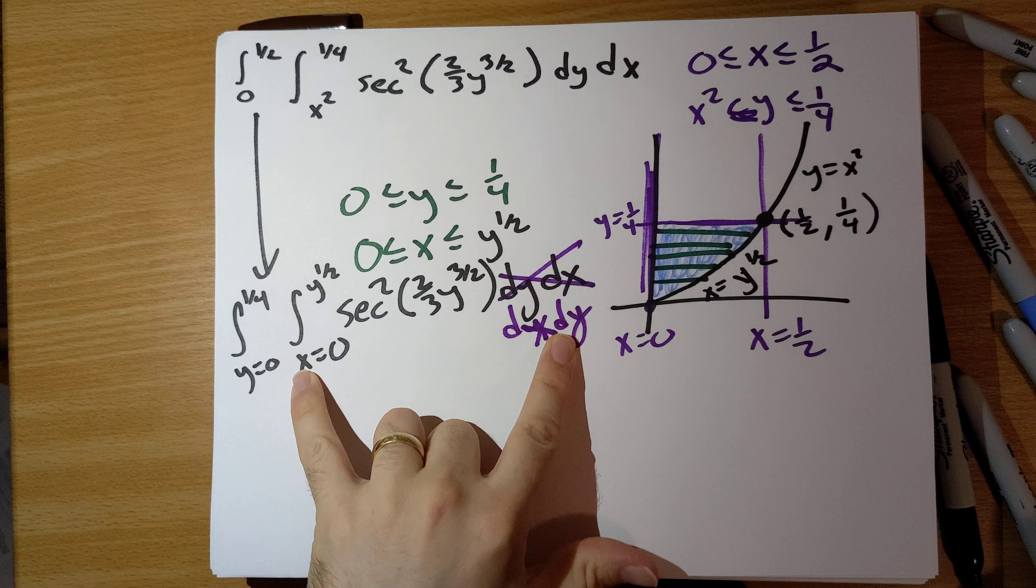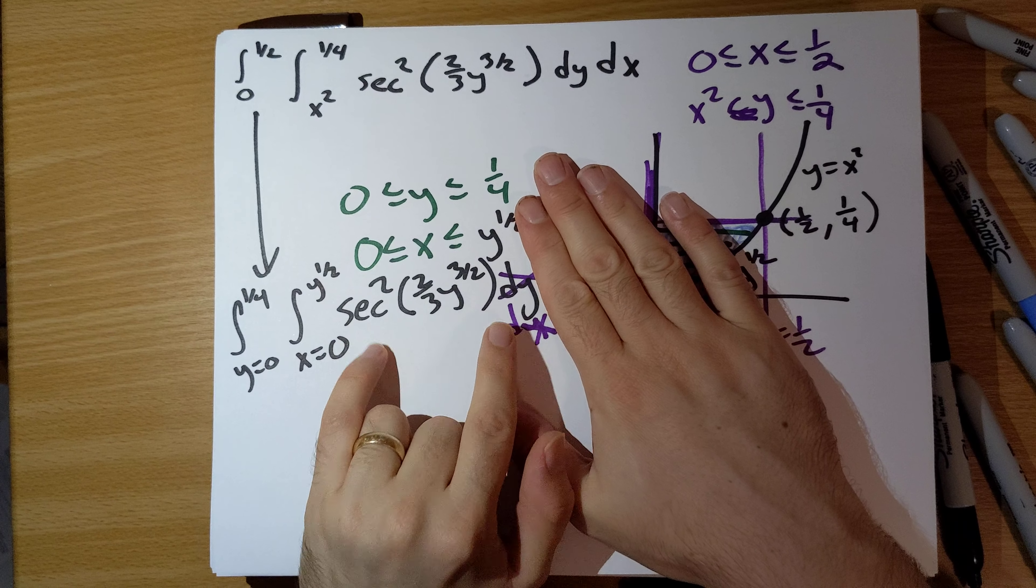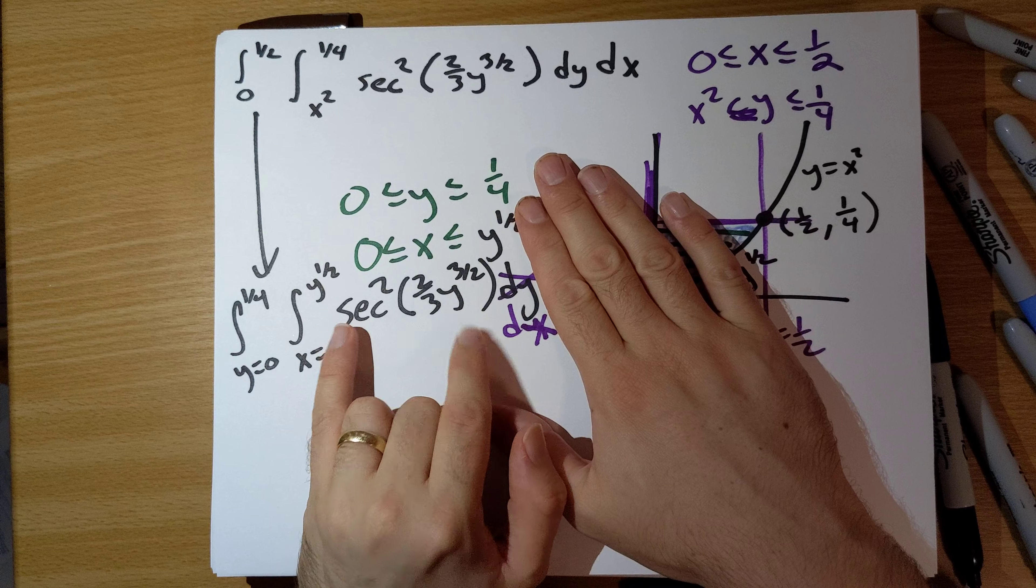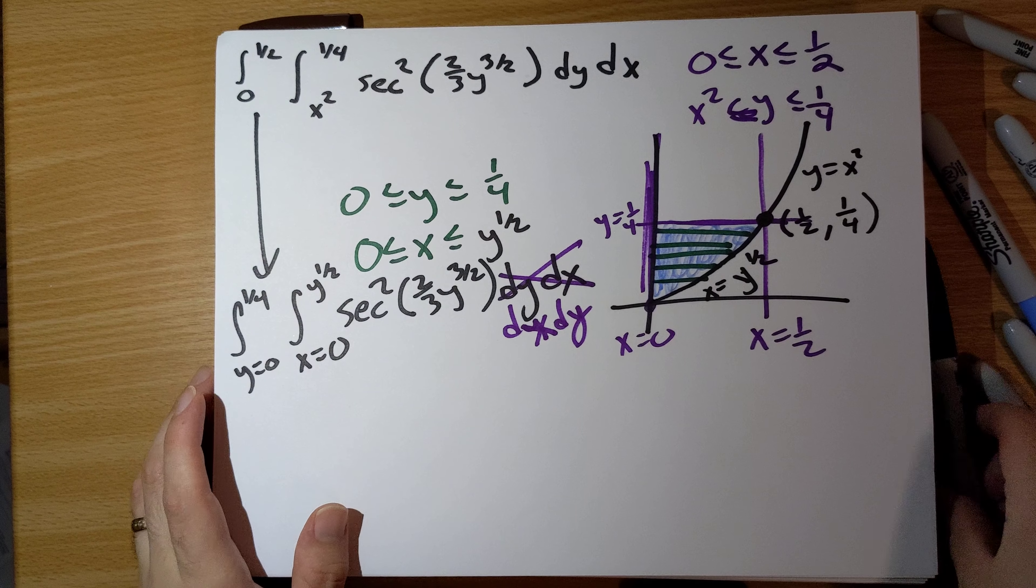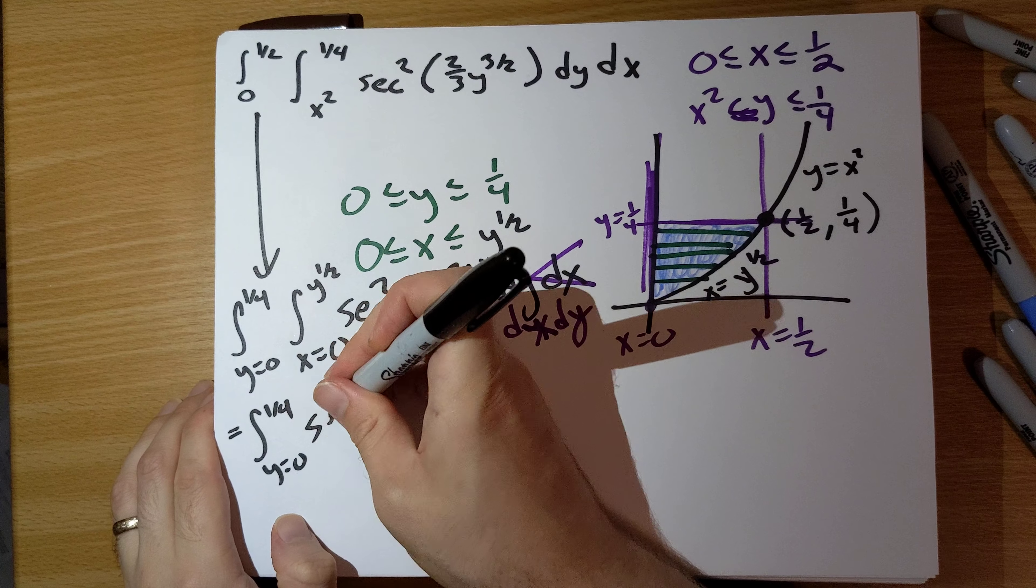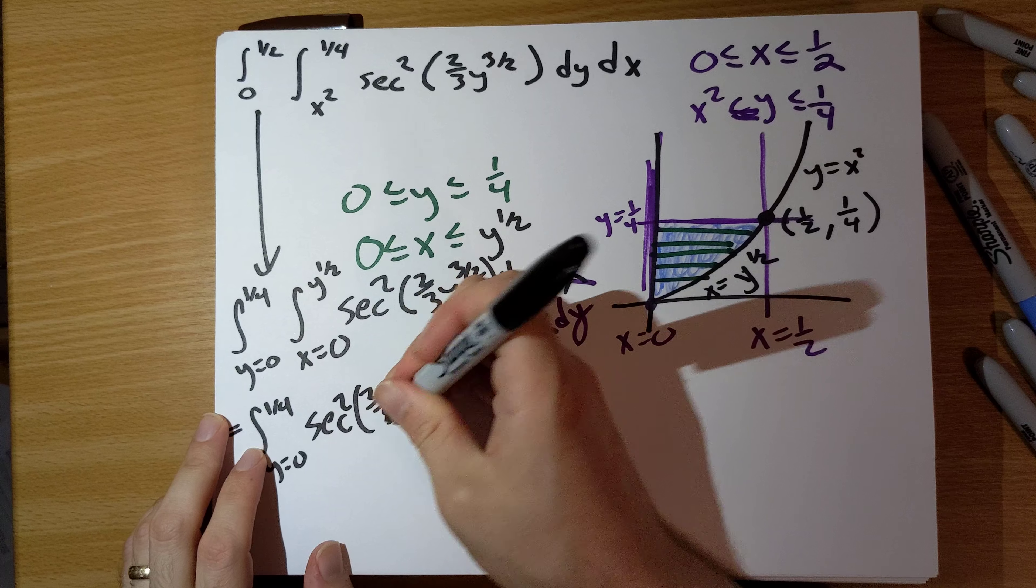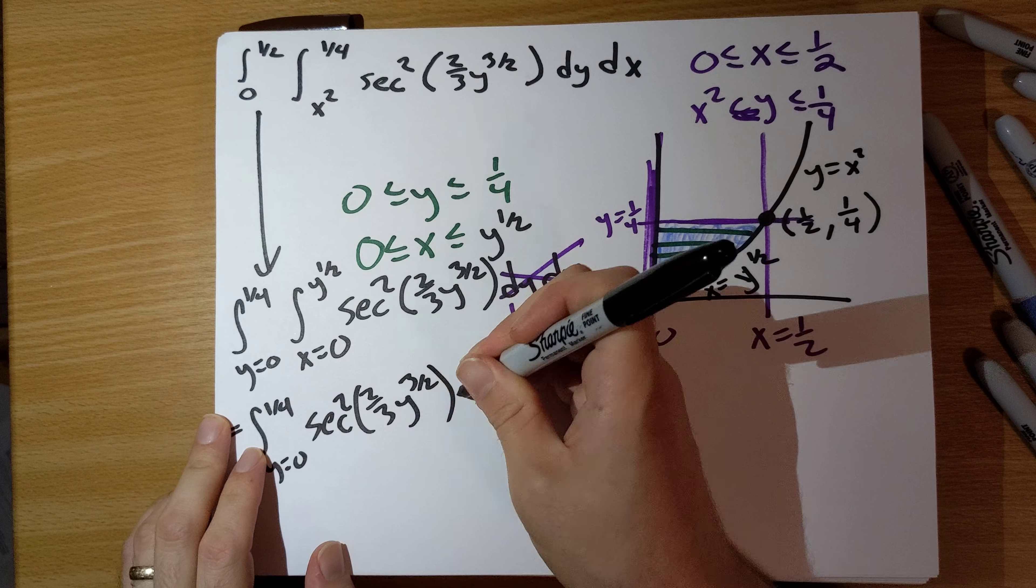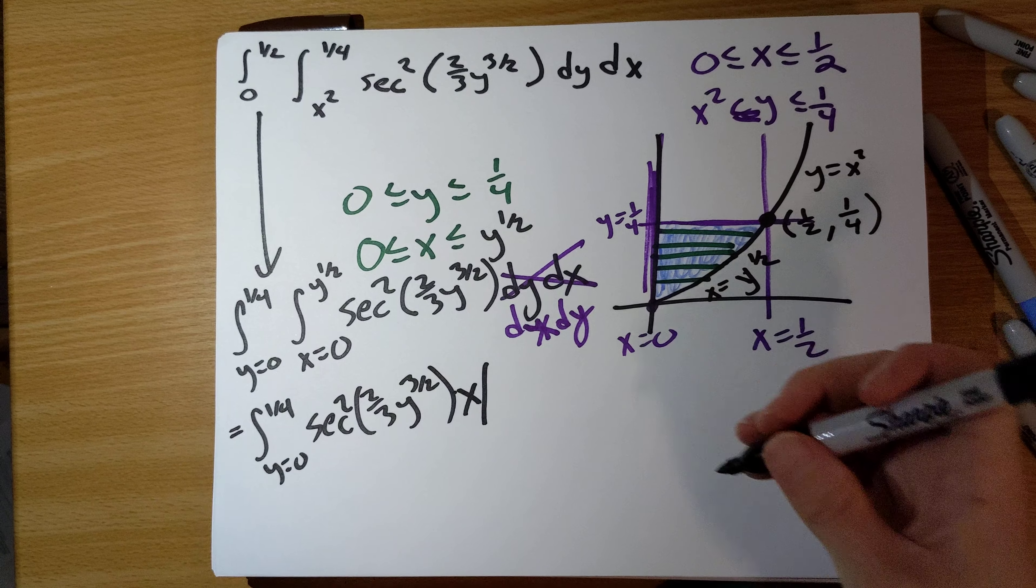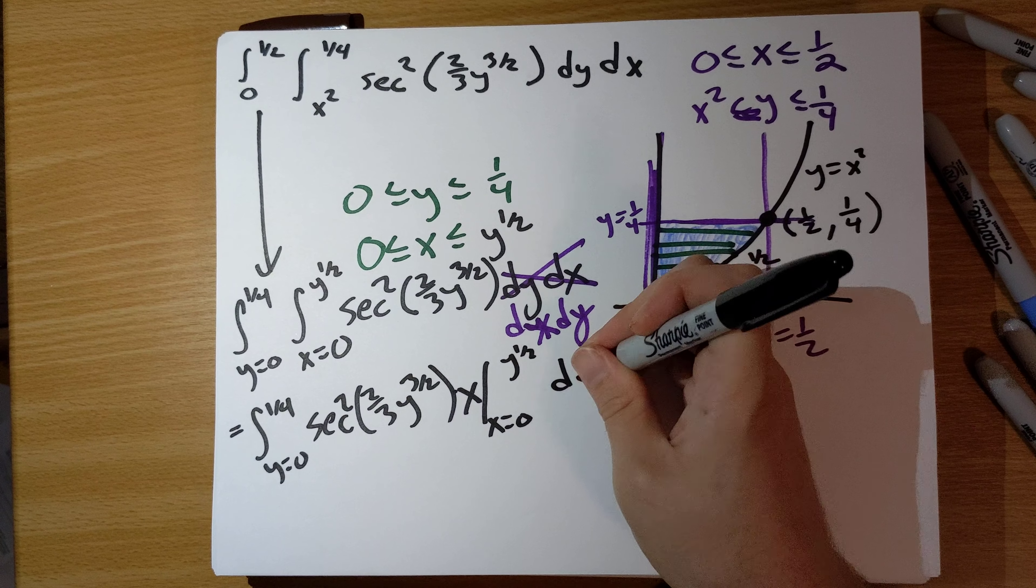So our inside integral, we're integrating with respect to x. This whole expression is a constant with respect to x. So the antiderivative is just this constant with respect to x times x. Plug in x runs from 0 to square root y dy.